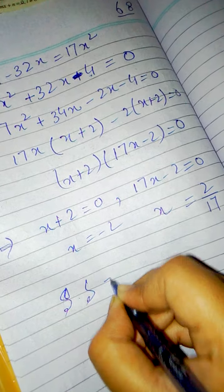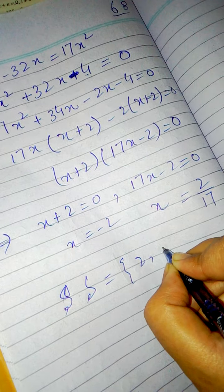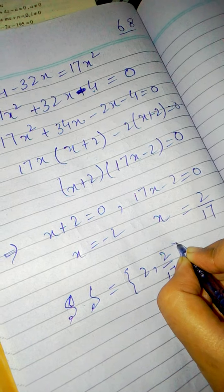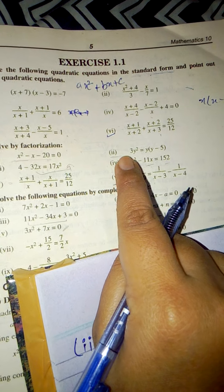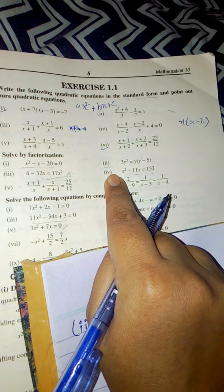This gives values 2 over 17 and negative 2. So the solution set will be 2 over 17 and negative 2. I have immediately done three parts. The fourth part you have to do yourself. First make the standard form, then prepare for factorization and factorize it to solve.